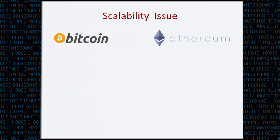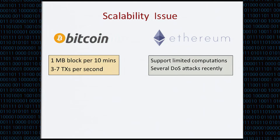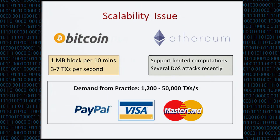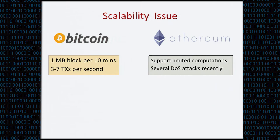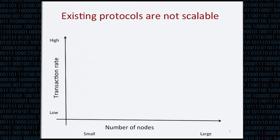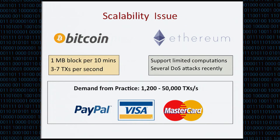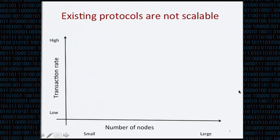Currently all cryptocurrencies have scalability issues. For example, Bitcoin, which is a decentralized peer-to-peer payment system, can currently process up to seven transactions per second. Similarly, Ethereum, which allows people to run decentralized applications on the blockchain, only allows a limited amount of computation, and the network has been under several denial-of-service attacks recently. If we look at demand from practice, all the centralized payment processors like PayPal, Visa, or Mastercard can process up to 50,000 transactions per second. So there is a large gap between what cryptocurrencies can support and what we need in practice. The real problem is that we do not yet have any scalable blockchain protocol.